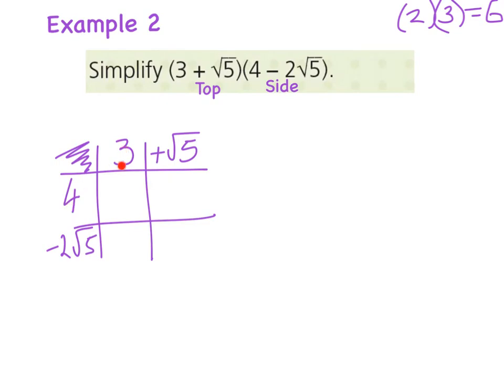So the first one is 4 times 3 and the answer I get there is 12. 4 times √5 so it's a whole number by a square root so that just gives me 4√5. Here now again I must multiply my numbers here so I've got 3 times minus 2 which gives me minus 6 and then I've got my √5. And here I've got minus 2 times √5 times √5. So just to remind you,